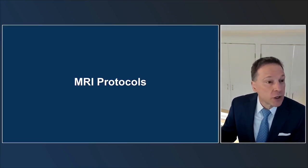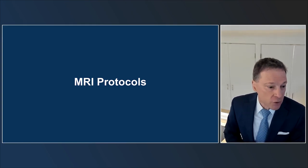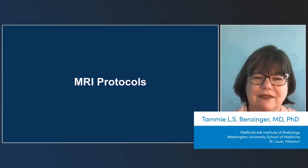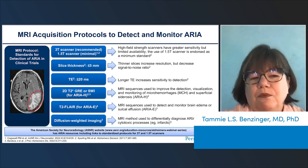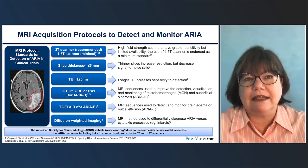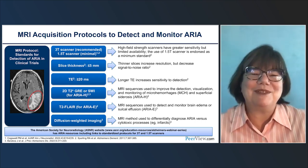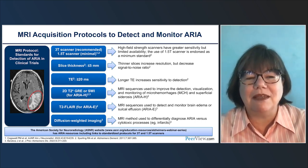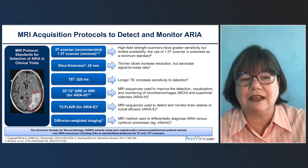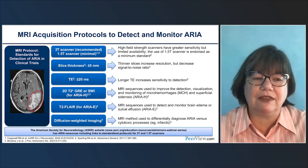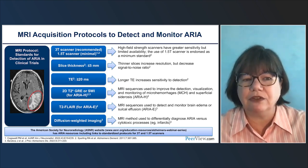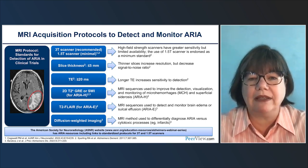Dr. Benzinger will now discuss the imaging protocols used to evaluate for ARIA. A really important consideration when talking about ARIA is the need for consistent results from scan to scan. One of the most important things is the imaging protocol acquired. As radiologists and neuroradiologists, we know what a difference a scanner, vendor, and field strength can make. The clinical trials were performed mostly at 3 Tesla. But if your practice has mostly 1.5T scanners, that may be a practical choice, as long as you are consistent.